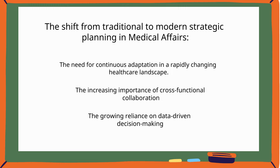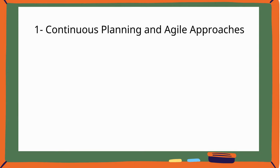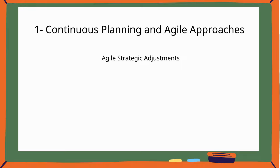In the following slides, we will explore each of these factors in detail. First, continuous planning and agile approaches. One of the most significant shifts in strategic planning today is the move from a static, annual cycle to a continuous and agile approach. Modern strategic planning is an ongoing process that allows medical affairs teams to regularly revisit and adjust their strategies based on new data, emerging trends, and feedback from the field.